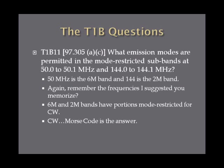What emission modes are permitted in the mode-restricted subbands at 50 to 50.1 MHz and 144 to 144.1 MHz? Once again, go back to that slide — 6 meters and 2 meters have a portion of the band solely devoted to CW, otherwise known as Morse code.